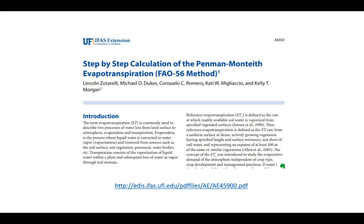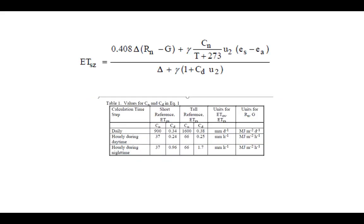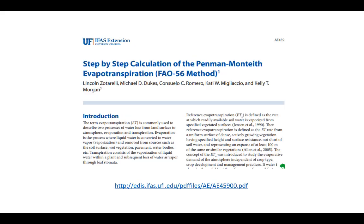Some people have done a nice job making a recipe for how to do these calculations. The net radiation term requires a lot of steps, so it's helpful to have it laid out clearly. David Dukes and colleagues at Florida produced a handy extension document showing how to do the calculations for grass reference — useful even if you're not focused on turf. The ASCE and FAO documents also serve as good references for these calculations.